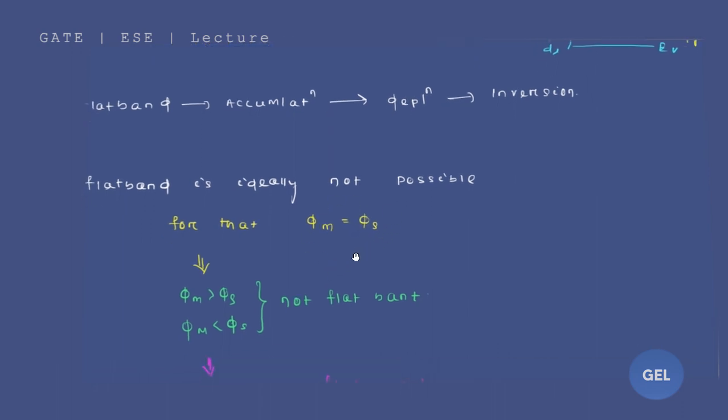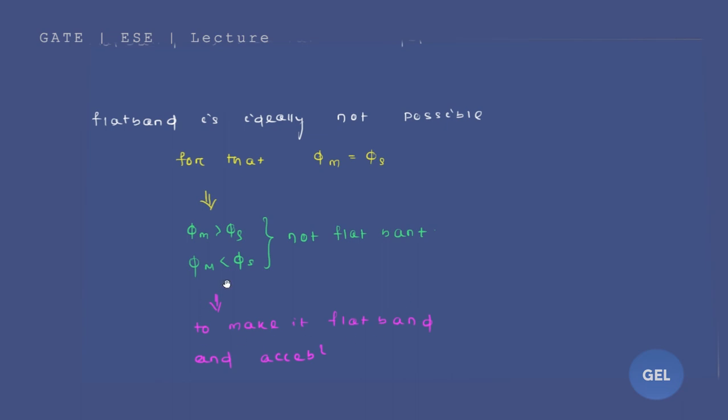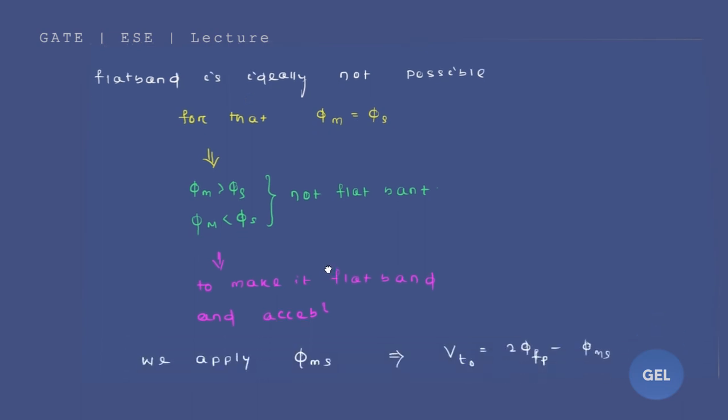Sometimes the work function of metal is greater than that of semiconductor or sometimes it is less than that of semiconductor. So flat band is ideally not possible and in order to make it accessible, in order to make it a flat band we need to provide a voltage.